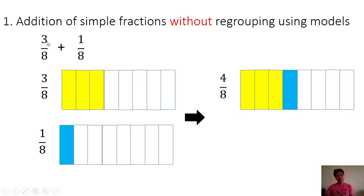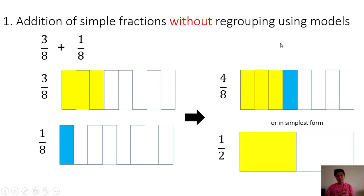Likewise, you can say that 3/8 plus 1/8 is equal to 4/8. And since 4/8 can be reduced into simplest form, then our final answer will be 1/2. Therefore, 3/8 plus 1/8 is equal to 4/8 or 1/2.